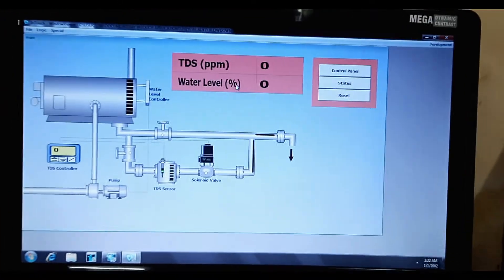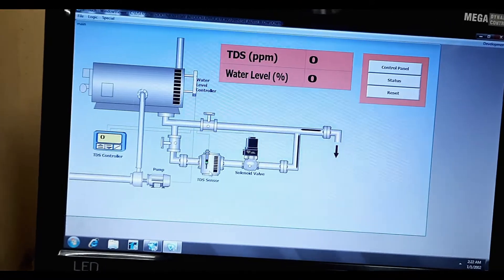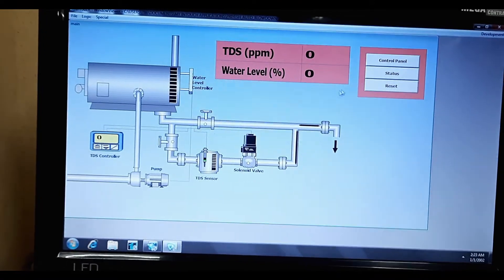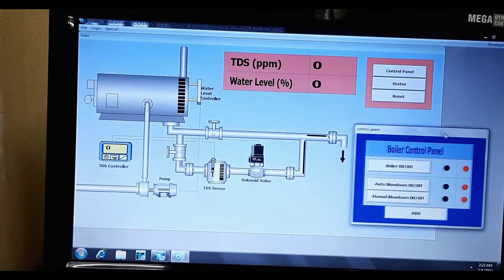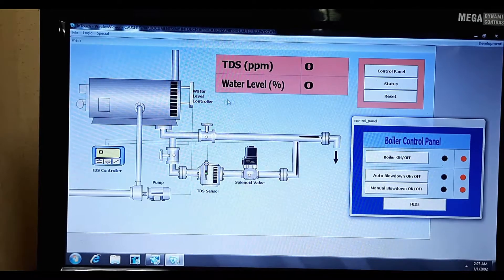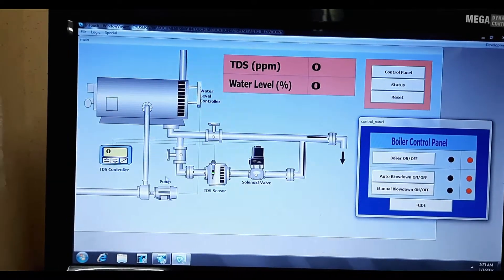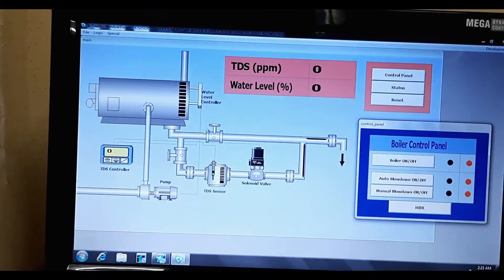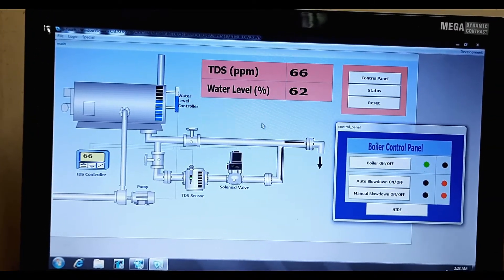Okay, so this is a SCADA for automatic blowdown system for boiler. So here we have the option to turn on the boiler. Now when I turn on the boiler, the water level will rise and it will also decrease. It will rise because the pump is on, but it will decrease because the boiler is on.